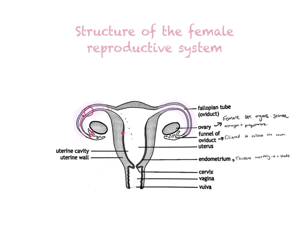The endometrium serves for the attachment of the embryo — that's where the embryo will actually attach. It gets thicker, more vascular, and more glandular. When fertilization does not take place, that lining will shed and prepare for the next cycle. Then at the bottom of the uterus, you have a narrow opening called the cervix, which is normally filled with a form of mucus to make it harder for sperm to enter the uterine cavity.